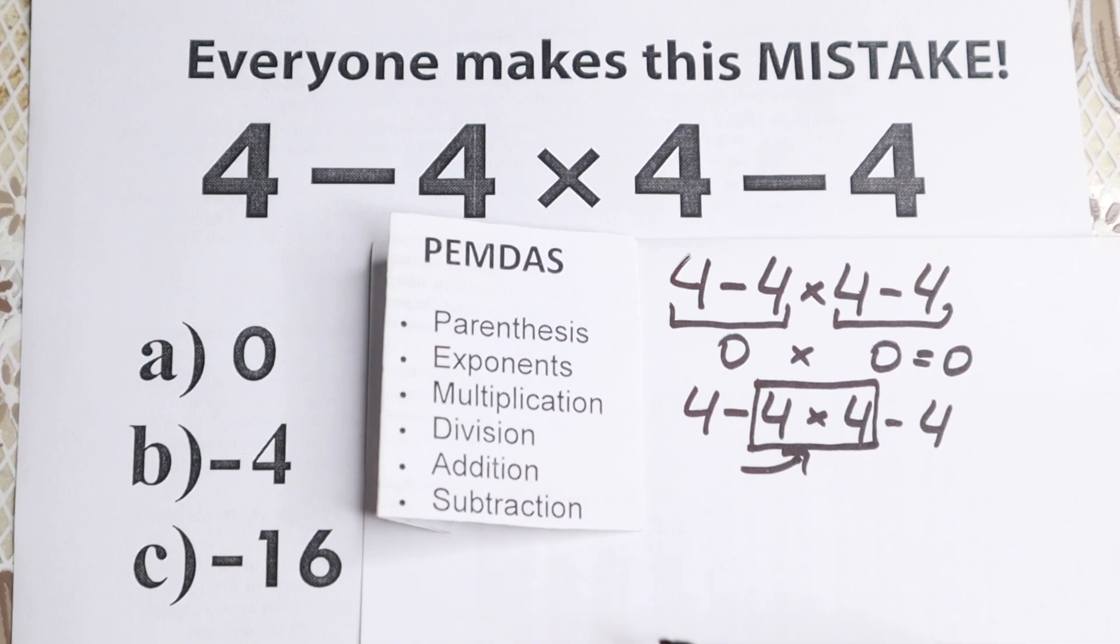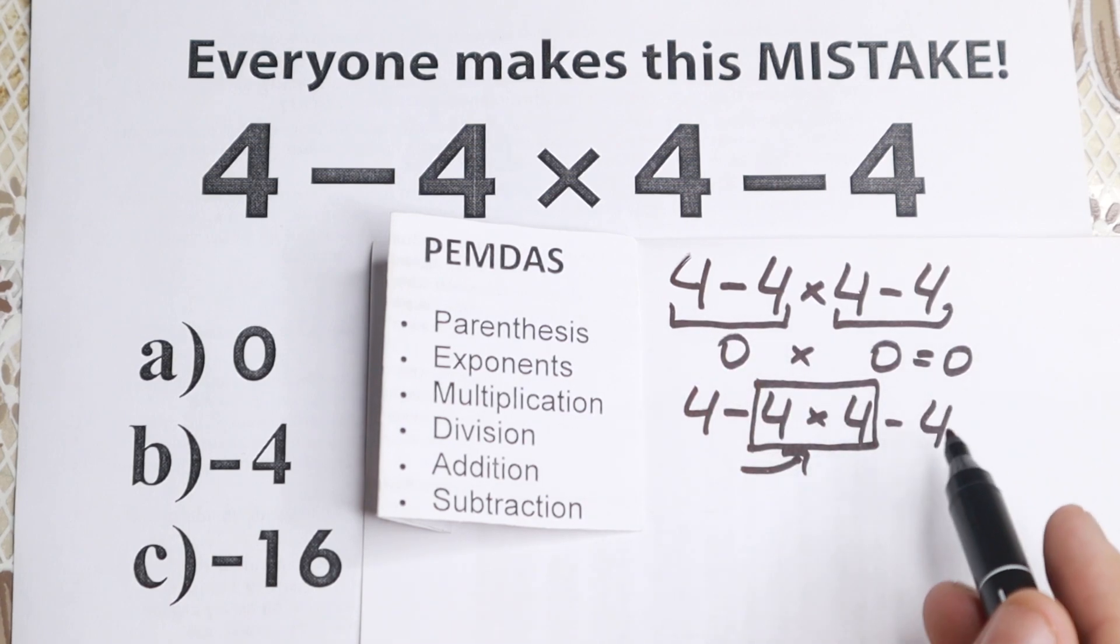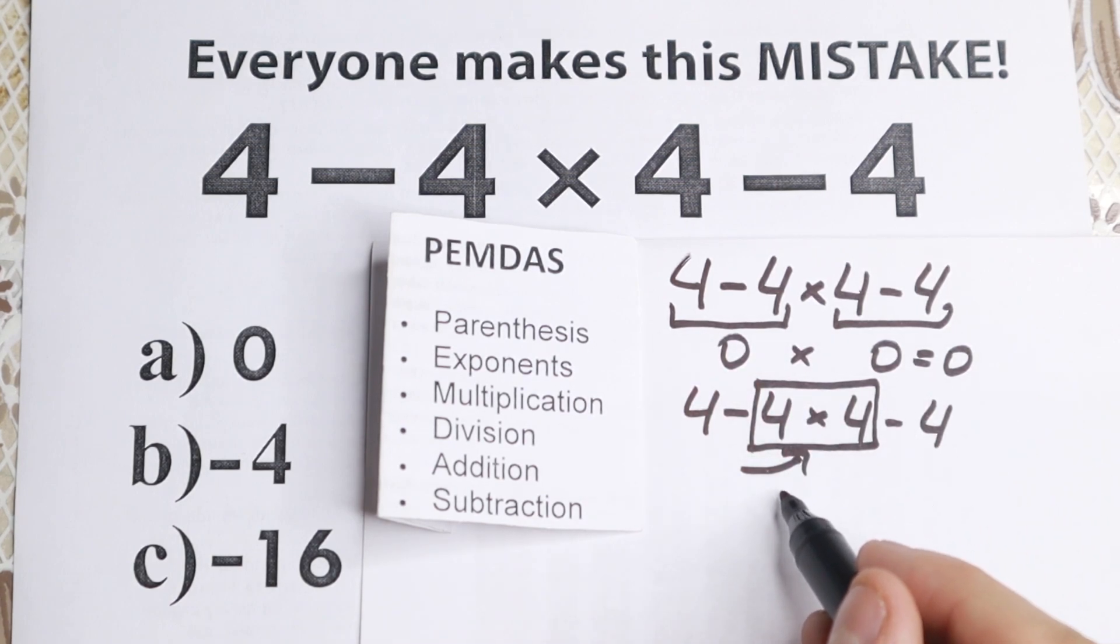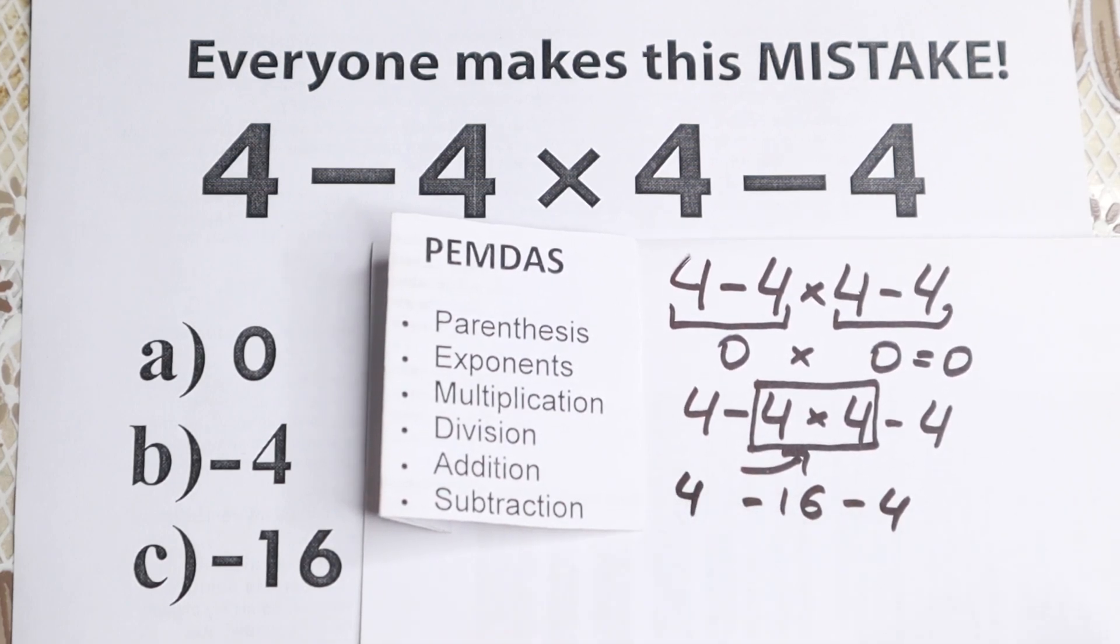So as you can see multiplication and division is before addition and subtraction, and this is maybe the main thing right here, because right here we start with subtraction, which is absolutely incorrect. Okay, 4 times 4 equals 16. We still have this minus 4 in the end and this 4 in the beginning.